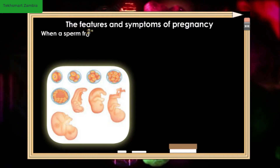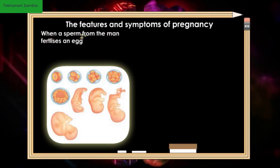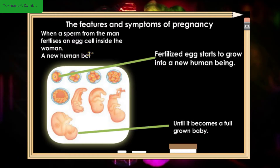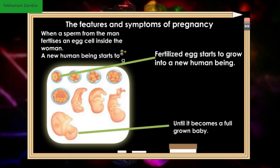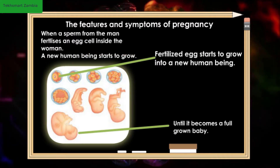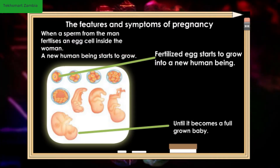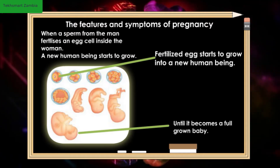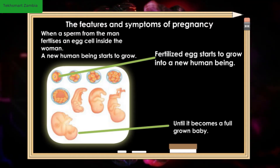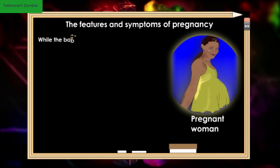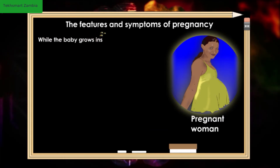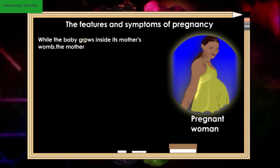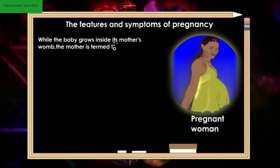When a sperm from the man fertilizes an egg inside the woman, a new human being starts to grow. While the baby grows inside its mother's womb, the mother is termed to be pregnant.